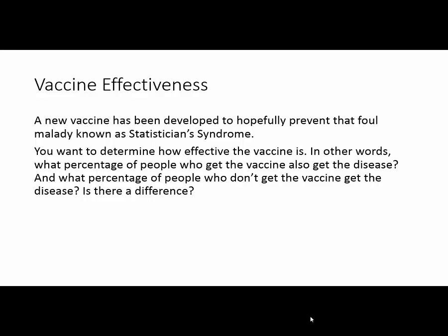You are trying to design a study and determine which test you're going to use. What you're really doing is having some people who get the vaccine and finding out what percentage of them end up getting statistician syndrome, and what percentage of people who don't get the vaccine end up getting statistician syndrome. Hopefully, there's a difference between the two — hopefully a smaller percentage who got the vaccine — but we'll have to find out.